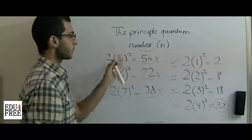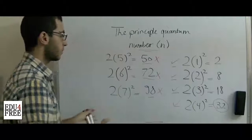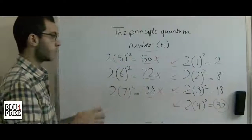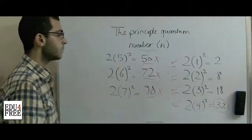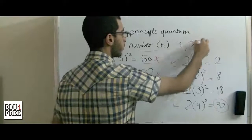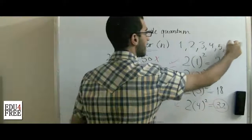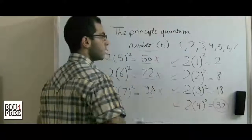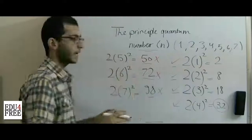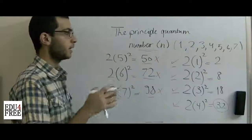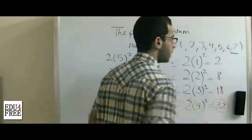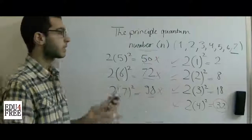One last thing about the principal quantum number: it is only a whole number. That means n equals 1, 2, 3, 4, 5, 6, or 7. The maximum number of energy levels in an atom is 7, found in the heaviest atom in its stable or ground state. There is no eighth energy level.